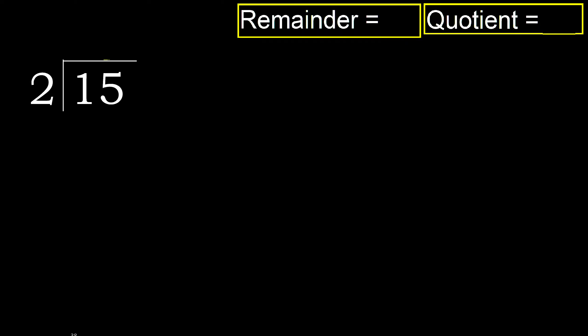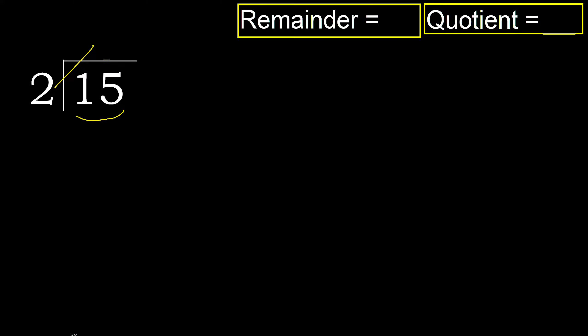15 divided by 2. 1 is less, therefore next. 15 is not less, therefore with 15: 2 multiplied by which number is nearest to 15, but not greater?